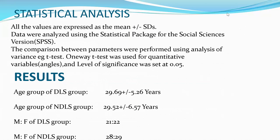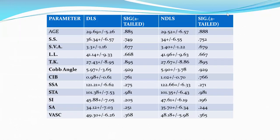Results — Age: the DLS group had a mean age of 29.69 ± 5.26 years, and the NDLS group had a mean age of 29.52 ± 6.57 years. The male-to-female ratio of the DLS group was 21:22, and the male-to-female ratio of the NDLS group was 28:29.